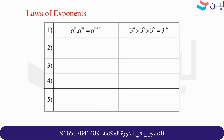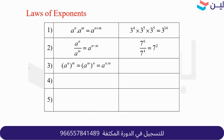With exponents, if we have the same base — a to the n times a to the m — we keep the base and add the exponents. Similarly with division: a to the n over a to the m means we subtract the exponents. This is the most important rule.